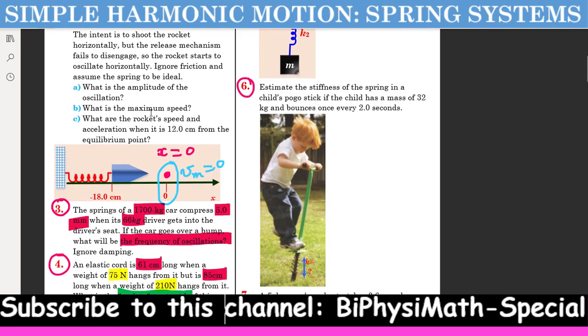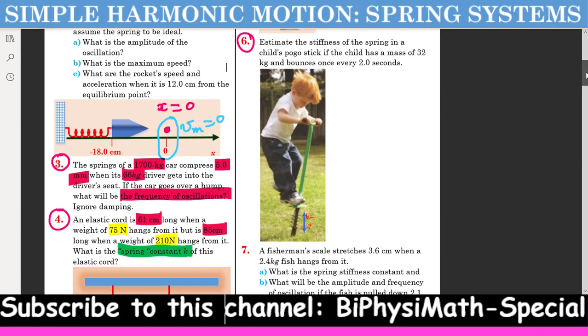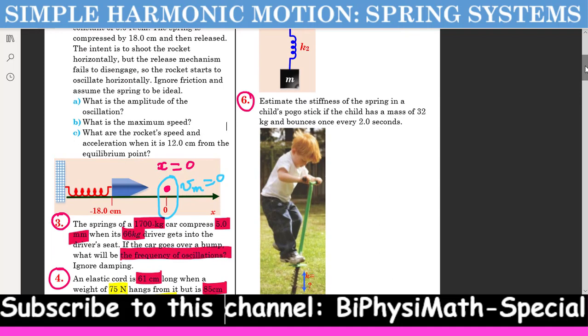Estimate the stiffness of the spring in a child's pogo stick if the child has a mass of 32 kilograms and bounces once every two seconds. We get the information from this statement.